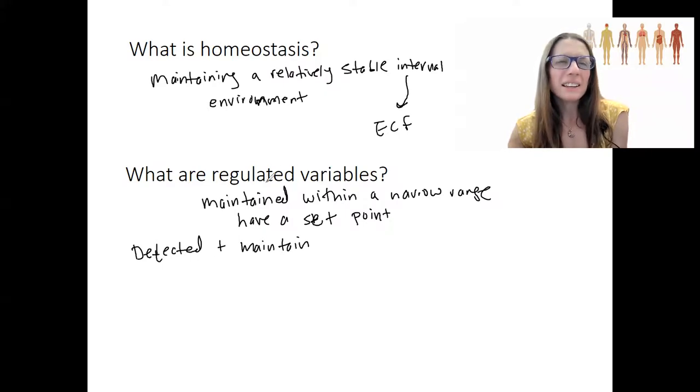So, the idea of this word, regulated variable, that's the common terminology for these variables that are maintained within a certain range. It's a little misleading, though, because you can have a variable that's regulated by the nervous system, but it's not a regulated variable. Why don't we actually go ahead and name some things that are regulated variables?